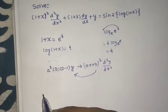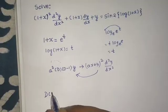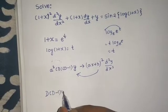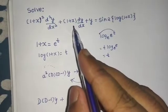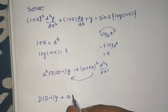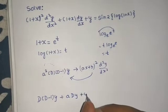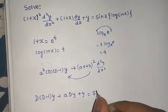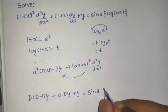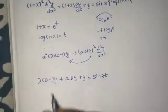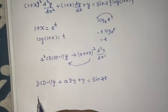That is 1 only, into d(d-1) times y. Plus this can be replaced as a*dy, so simply a*dy plus y equals sin(2*log(1+x)). Now log(1+x) is t.